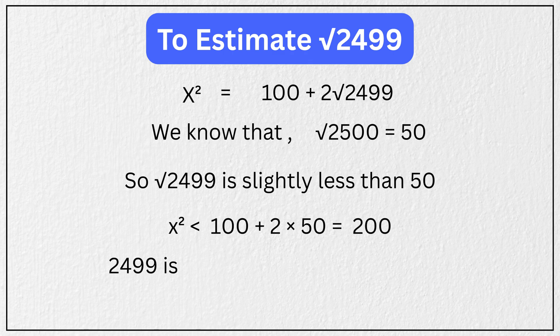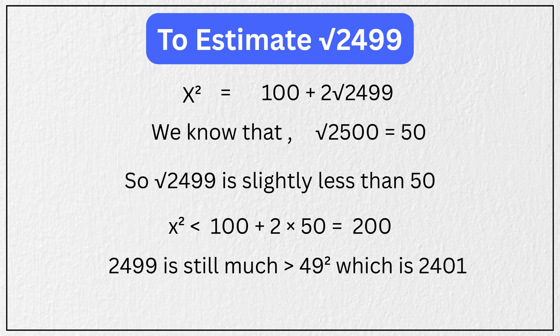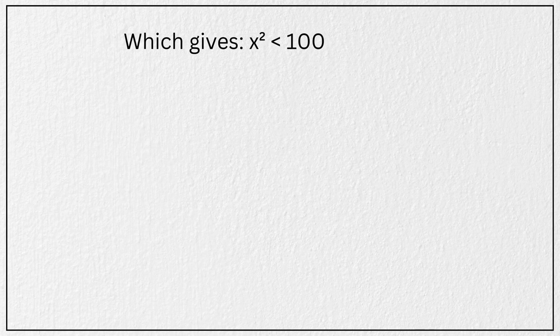But 2499 is still much larger than 49², which is 2401. So √2499 > 49, which gives x² < 100 + 2×49 = 198.